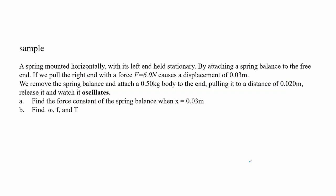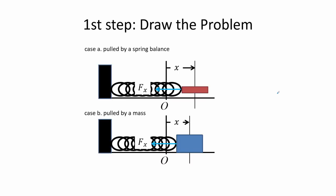Here we have an example of a spring mounted horizontally with its left end held stationary. By attaching a spring balance to the free end, if we pull the right end with a force of 6.0 N it causes a displacement of 0.03 meters. We then remove the spring balance and attach a 0.50 kg body to the end, pull it to a distance of 0.020 meters, release it, and watch it oscillate. We draw the two cases: the first is stationary with the spring balance applied, and the second allows oscillation with the mass attached.